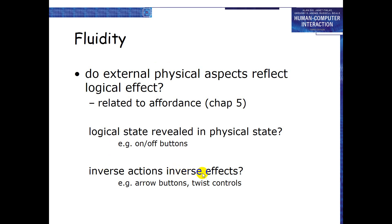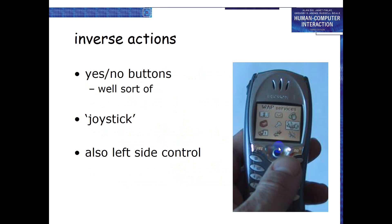Inverse actions have inverse effects. For example, a joystick — if you push it right, you expect the focus on screen to move right; push left, focus moves left; push down, focus moves down. The physical appearance of the control tells you its logical flow. Inverse actions are opposites — yes and no are inverse to each other, one on the left side and one on the right.